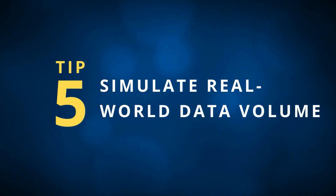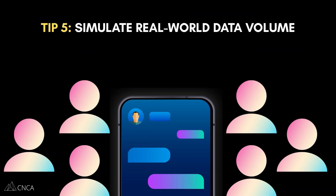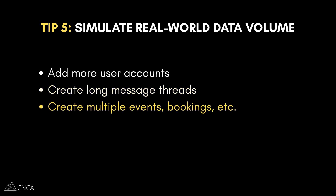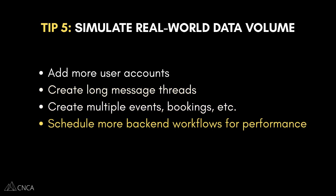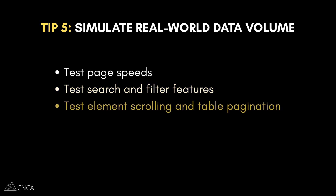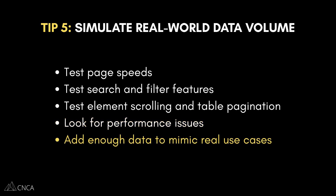Tip number five: simulate real-world data volume. It's one thing to test your app when there are two test entries in your database. It's another thing to test it when there are hundreds of users and thousands of records in play. So try adding more user accounts, creating long message threads, adding multiple calendar events, and triggering many scheduled backend workflows from different users, so your app has to work harder within shorter timeframes. Then test your page speeds, your search and filter performance, and how scrolling and pagination behave. This kind of testing helps you spot performance issues early, like when a repeating group gets slow or a database update lags. You need enough data to mimic real use.